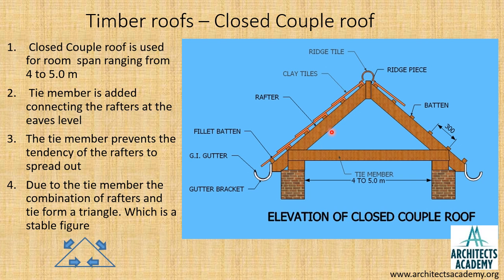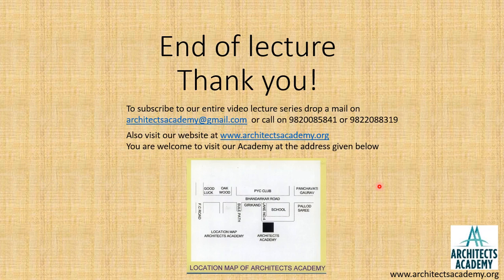Because of the addition of the tie member, the span of the roof has also increased. In case of the couple roof we had seen that the maximum span was 3.5 meters, while in the closed couple roof the span can be increased up to 5 meters. That is how the closed couple roof is designed. This is the end of part 2 of the lecture — thank you.